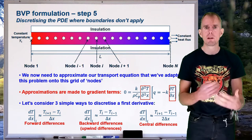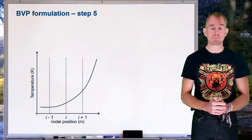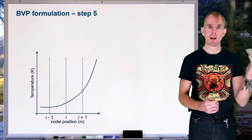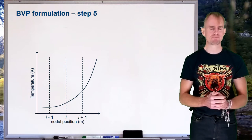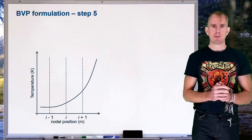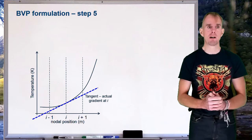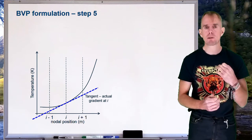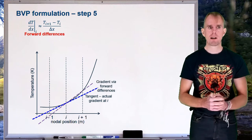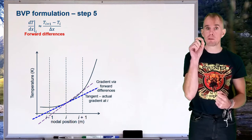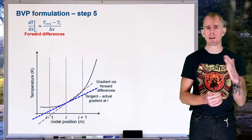Let's use a graphical experiment to choose between these gradient approximations. On the whiteboard, I have temperature on the y-axis and nodal position on the x-axis, with dashed vertical lines at nodes i, i+1, and i−1. The tangent at node i represents the true temperature gradient. For the forward difference, I draw a line between the temperature curve at nodes i+1 and i — the purple line — and its gradient is quite different from the tangent. It's a rough approximation, improvable by decreasing Δx, but at the cost of more nodes, more memory, and more computation time.